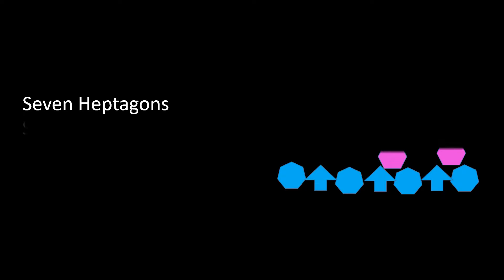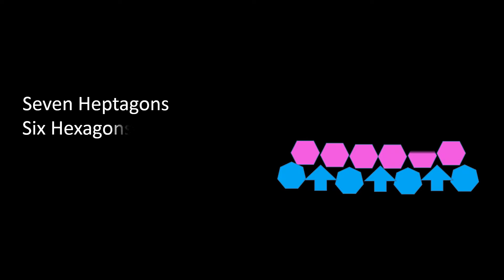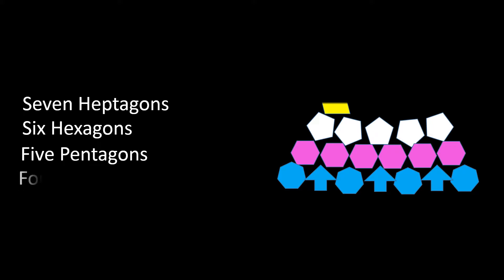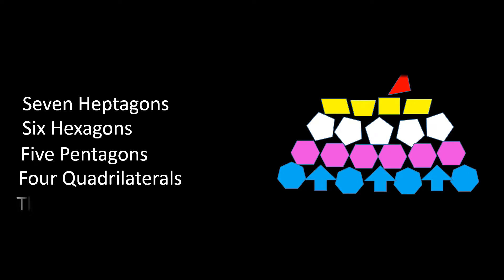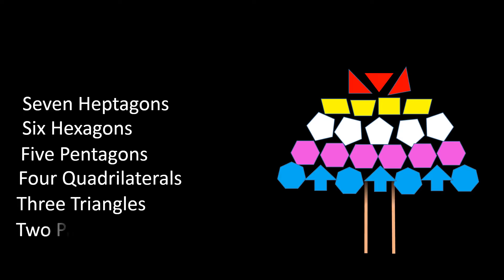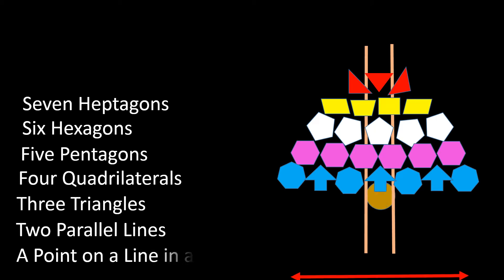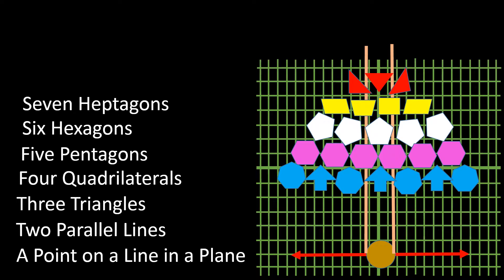On the seventh day of geometry, my teacher gave to me seven heptagons, six hexagons, five pentagons, four quadrilaterals, three triangles, two parallel lines, and a point on a line in a plane.